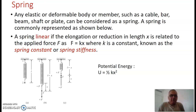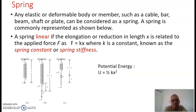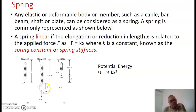We will start with the spring element. The spring element is basically any deformable body member. For example, a cable, a beam, a shaft, or a plate can be considered as a spring, because when a force is applied to it, it deforms, and when the force is removed, it comes back to its position. All these elements can be modeled by a spring, in which a force applied causes a deformation. If we assume the spring is linear, the force applied is proportional to the displacement, and the constant of proportionality is called the spring constant. The potential energy stored in a spring is 1/2 kx².